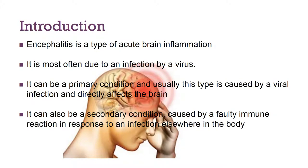Encephalitis is inflammation of the brain. It is most often due to an infection by a virus. It could be a primary condition or a secondary condition. If a primary condition, it is usually caused by a viral infection and it directly affects the brain. If it's a secondary condition, it is caused by a faulty immune reaction in response to an infection elsewhere in our body.